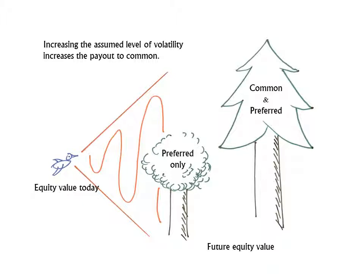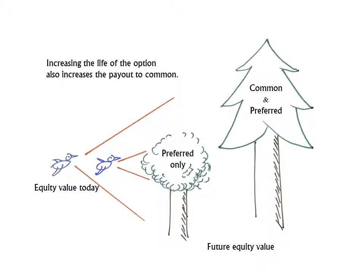If volatility swings in a narrow range, the bird may land only in the lowest branches of the pine, even in the most optimistic scenarios. If greater volatility is assumed, the bird is more likely to land in a higher branch, increasing the payout to common. Another important input to the OPM is the life of the option. If a short life is assumed, volatility does not have sufficient time to generate payouts at higher values. With a longer life, the prospect of a higher payout increases.